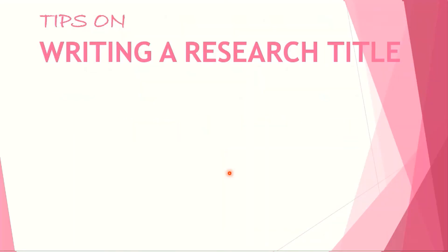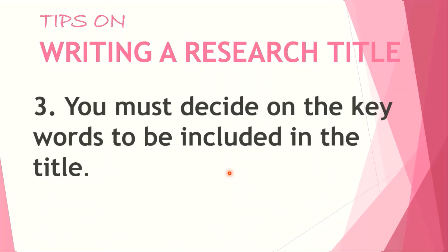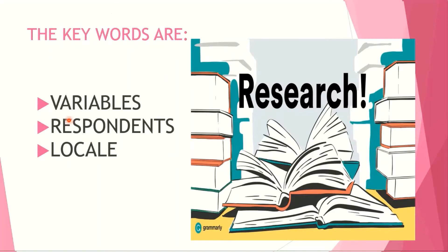Let's proceed with tip number three: you must decide on the keywords to be included in the title. What are these keywords? Number one, variables — we just finished discussing the two types: independent and dependent. Then, respondents — these are the people involved in your study, from whom you gather the data; they are the subject of your study. Number three is the locale — the place where you're going to conduct your study.